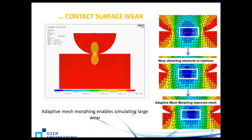Adaptive mesh morphing enables simulating large wear. This adaptive mesh morphing improves the mesh and lets you place more elements in the contact area. The more elements you have in the contact area, the better the prediction of contact stress and contact pressure — and that's really important because contact pressure is directly related, with an exponent, to the amount of wear. If we do not calculate the contact pressure correctly, we will not predict wear correctly.